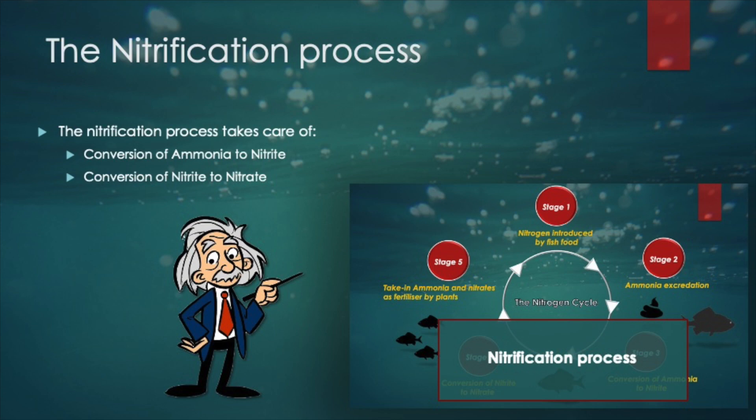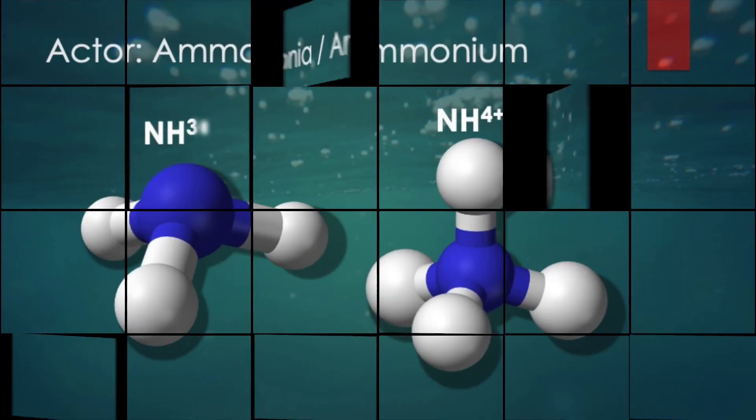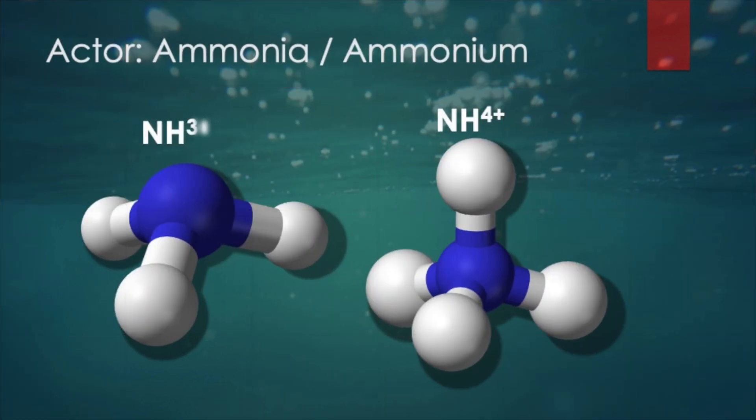Before we go in depth on the chemistry occurring in our tanks and ponds, let me first introduce the actors of the play. The first actor is ammonia. Ammonia is produced by the metabolism of amino acids and other compounds which contain nitrogen. It contains three hydrogen atoms bonded to one central nitrogen atom. In normal situations, ammonia (NH3) is instantly ionized to ammonium (NH4) in tanks and ponds. This is a good thing, as ammonia is much more dangerous and toxic to fish than ammonium. Ammonium consists of four hydrogen atoms bonded to one nitrogen atom. Don't underestimate the lethal power of ammonium — it is better to get rid of it as soon as possible.